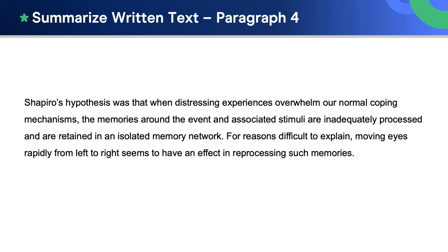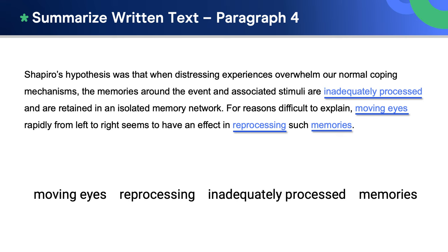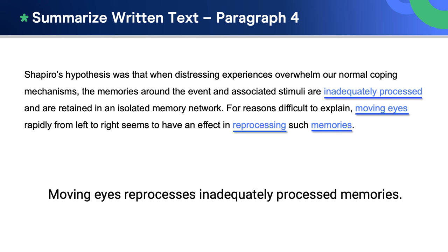One paragraph to go, and then we can combine our simple sentences into one complex single-sentence summary of the text. Again, let's take just the key words from the final paragraph: inadequately processed, moving eyes, reprocessing, and memories. To make it clear and simple, we can change the order of the key words, and then change the words slightly to make the sentence grammatically accurate: moving eyes reprocesses inadequately processed memories.